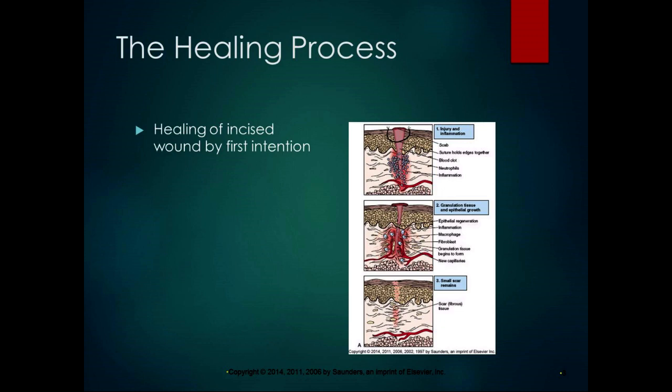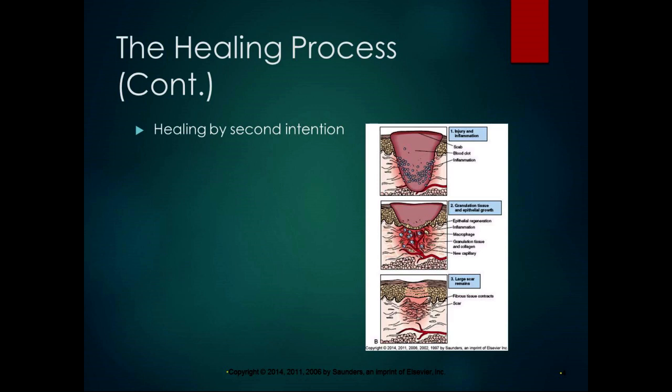With first intention healing, the scab is small, the suture holds the ends together, you get blood clotting right around the area, inflammation is limited, you get good granulation tissue and epithelial growth, and the resulting scar is pretty small. Healing by second intention refers to a situation where there's a large break in the tissue, and because of that large break there's more inflammation, a longer healing period, and more scar tissue forms.